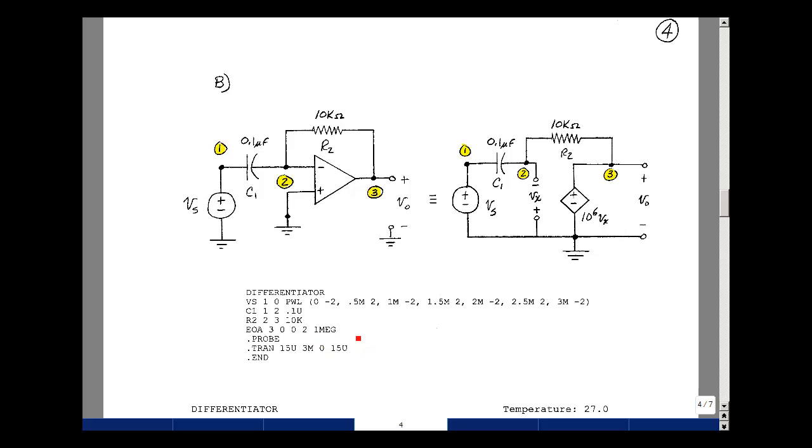Remember in SPICE, the uppercase and lowercase m means 10 to the minus 3. I could use our piecewise linear command to describe V sub s. At 0 seconds, I have minus 2 volts. At 5 milliseconds, I have 2 volts. And then at 1 millisecond, I have minus 2 volts, and so on. We can build that triangle wave with just line segments.